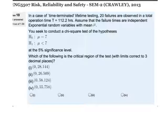In a case of time-terminated lifetime testing, 20 failures are observed in a total operation time T equals 112.2 hours. Assume that the failure times are independent exponential random variables with mean mu.